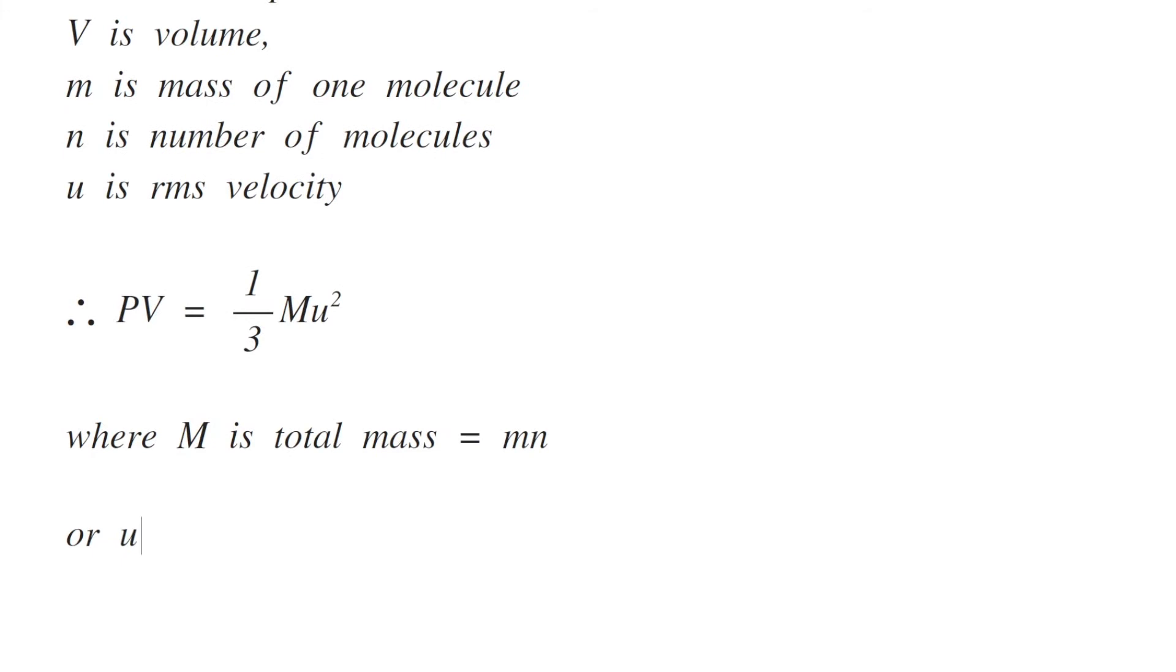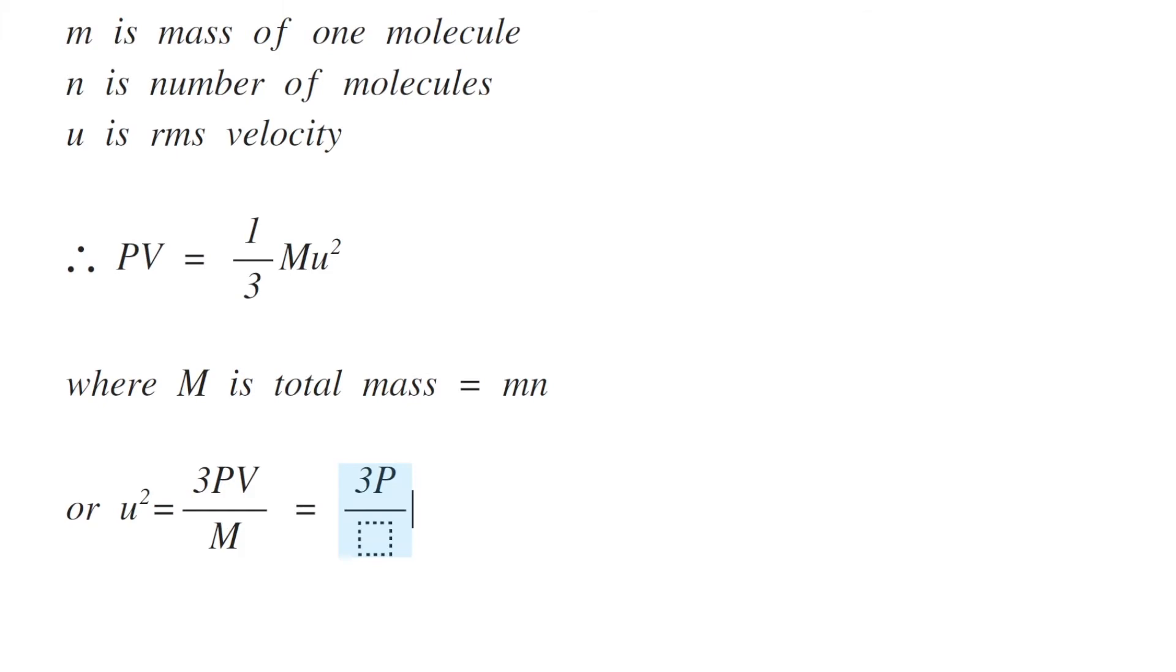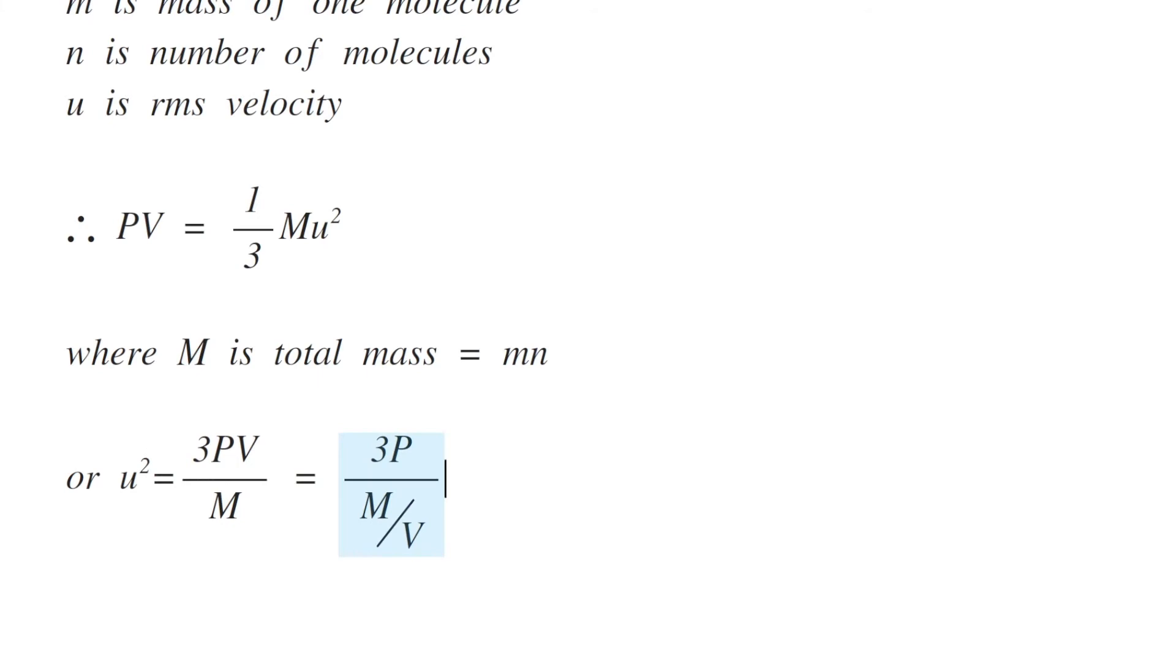Or u² can be written as 3PV/M, or 3P divided by M/V, where M/V can be replaced by the density of the gas, that is d.